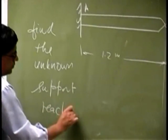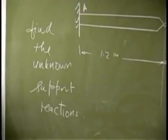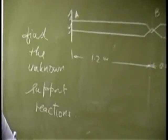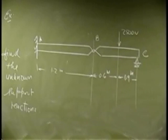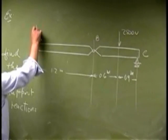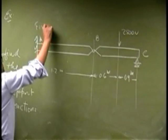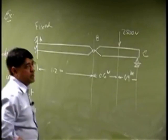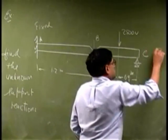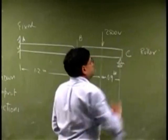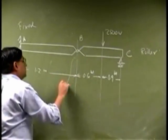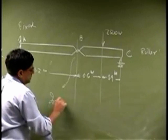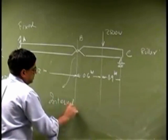So we are looking at finding the unknown forces at point A, that's a fixed support, and at point C, that's a roll-on. Then in between at point B, this is the internal hinge.